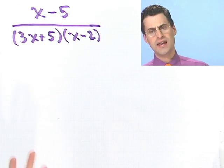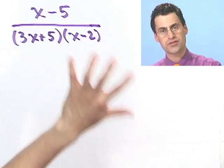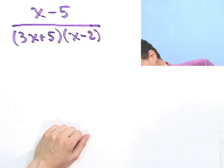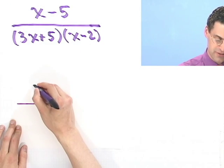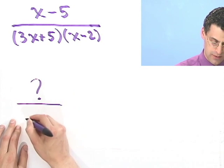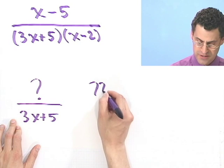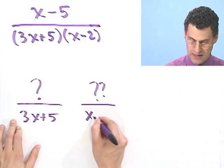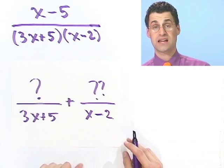And suppose I say to you, hey, you know what? Well, that actually is the answer to a question. And the question was, I had two fractions. One fraction had some mystery thing on top, but 3x plus 5 on the bottom, and some other mystery thing on this top, an x minus 2. And then I added them together, and I got that as the answer.